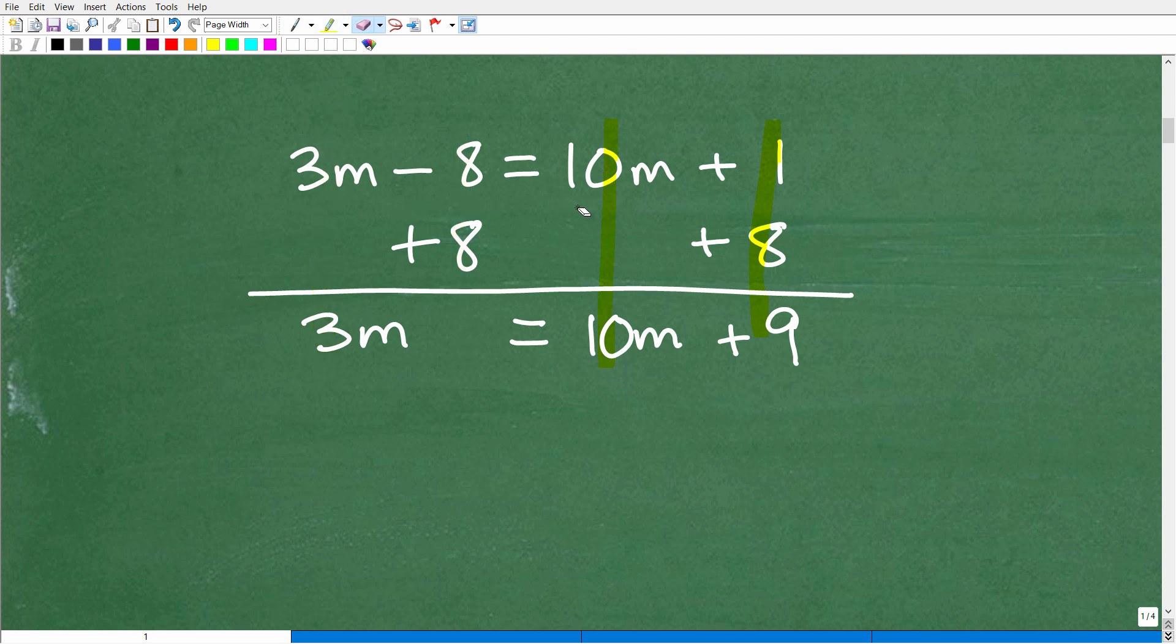All right, so now we can kind of add down in a column manner. So we have 3m plus nothing is 3m. Negative 8 plus 8 is 0. Now we don't need to write a 0 there because it's just implied there's nothing there. So this already has removed our 8 from the left-hand side. So we have 10m plus nothing is 10m, and now we have 1 plus 8, which of course is 9. So this is our first step. Now, you could start with the variable, but I just chose to start with the number. So now we have 3m is equal to 10m plus 9.